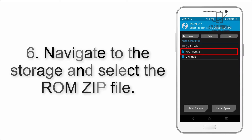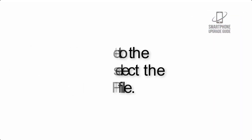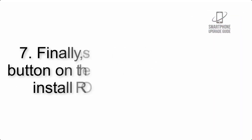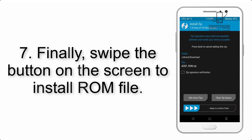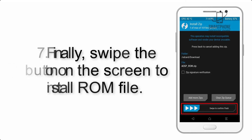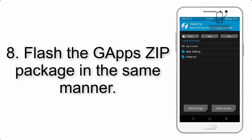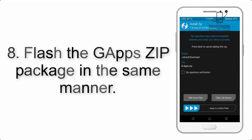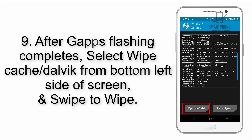Step 5: Go back to the recovery main screen and tap on the Install button. Step 6: Navigate to the storage and select the ROM zip file. Step 7: Finally, swipe the button on the screen to install the ROM file.